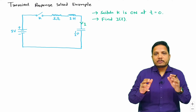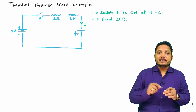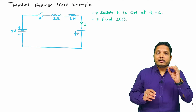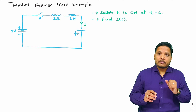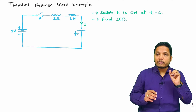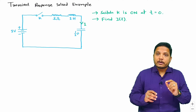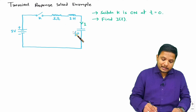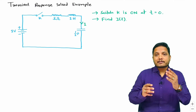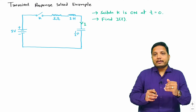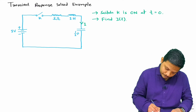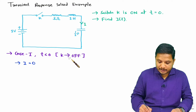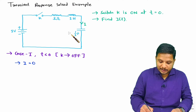Whenever you have a question based on transient response, you should bisect the situation into time frames. When t is less than zero — before t equals zero — the switch was off, and as the switch is off, you don't have current in this loop. So current i equals zero.